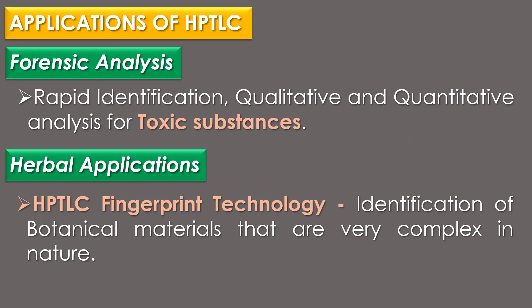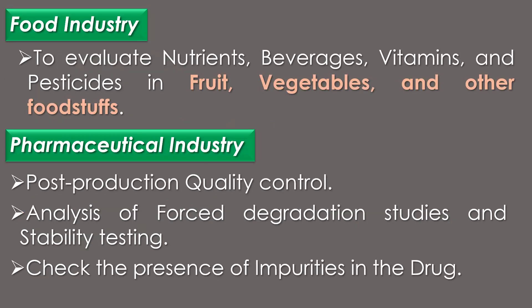Applications of HPTLC include: forensic analysis, where HPTLC offers rapid identification as well as qualitative and quantitative analysis for toxic substances in intoxication cases. In herbal applications, HPTLC fingerprint technology can be used for identification of complex botanical materials. In the food industry, HPTLC is used to evaluate nutrients, beverages, vitamins and pesticides in fruits, vegetables and other food items. In pharmaceutical industries, HPTLC is used in quality control, analysis of forced degradation studies, stability testing, and checking for impurities in drugs.